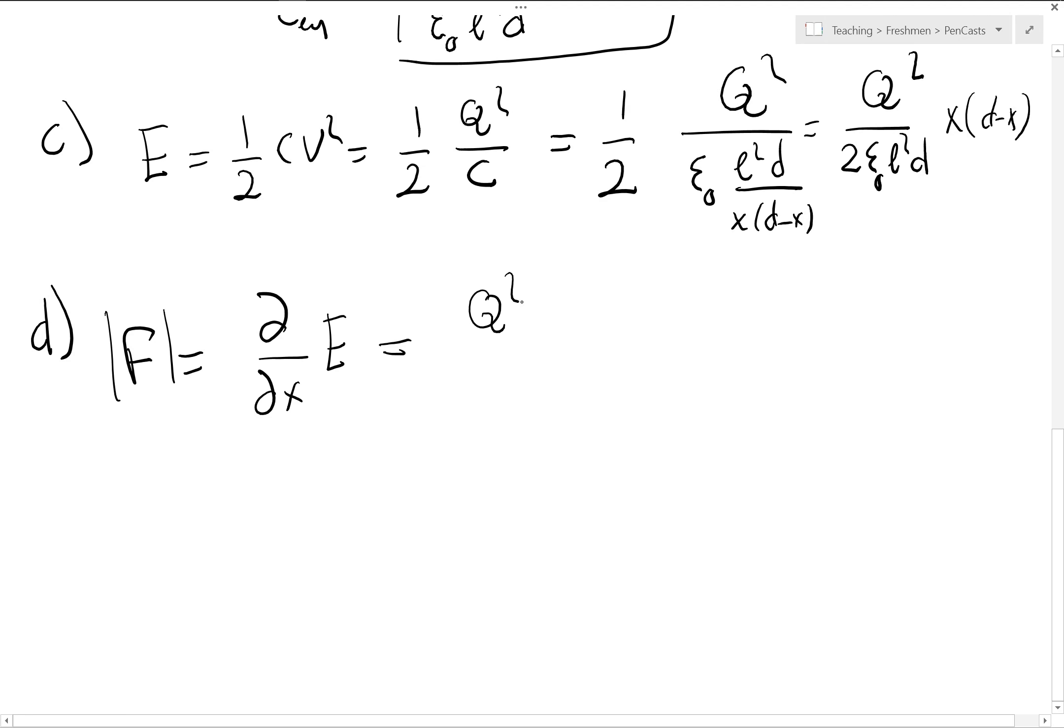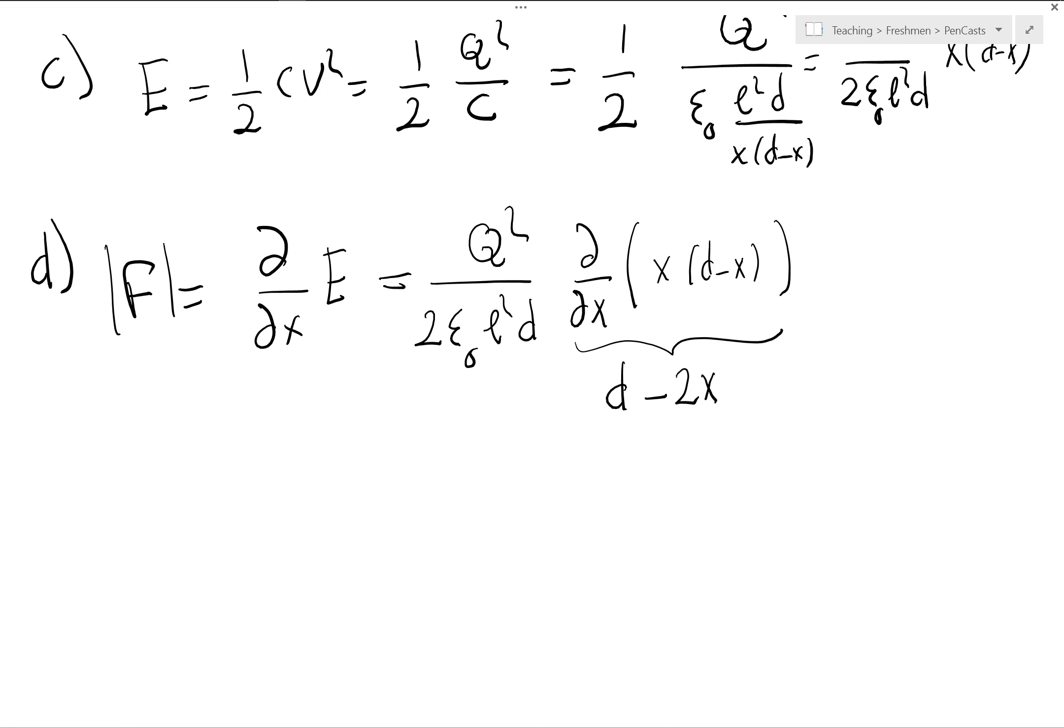Let's see. I have Q squared over 2 epsilon 0, L squared, D. Del by del X, X, D minus X. So this is going to give me two terms. The first term is D. The second term is going to be X squared is 2X.